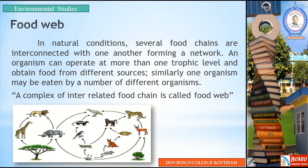Now let us see what is a food web. In natural conditions, several food chains are interconnected with one another, forming a network. An organism can operate at more than one trophic level and obtain food from different sources. Similarly, one organism may be eaten by a number of different organisms. A food web is a network of different types of food chains within an ecosystem, where the components are interconnected.